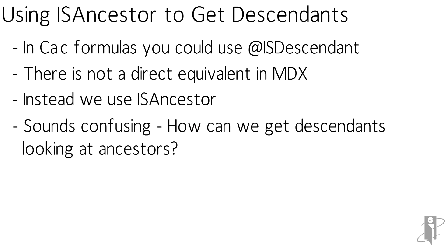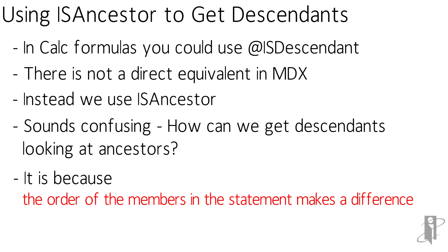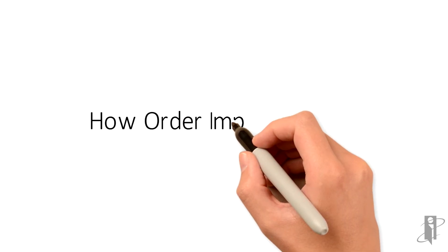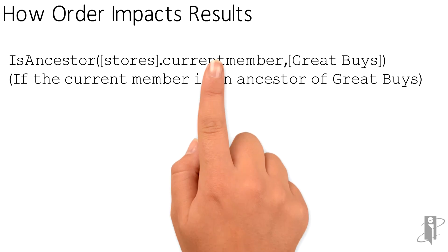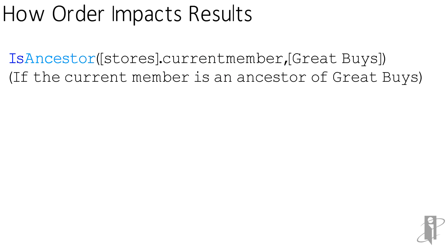It may sound a little bit confusing — how can we get descendants by looking at ancestors? It's because the order of the members in the statement makes a difference. For example, if I say isAncestor of Stores' current member and Great Buys...